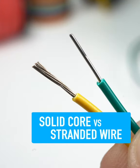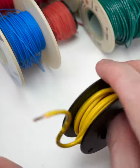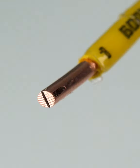Solid core or stranded wire. Heavy gauge solid core wire is generally preferred for high power applications, like the wiring in your walls.